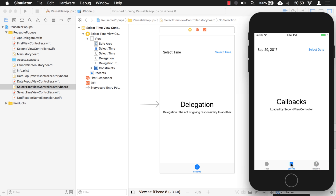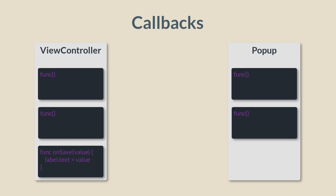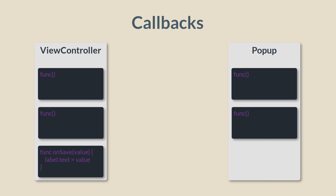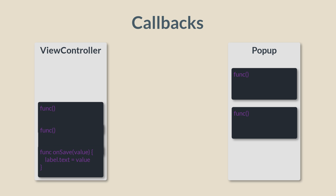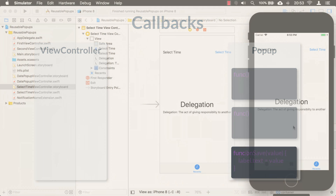If you remember from callbacks, what we did is we took a block of code — a function — and we passed just that function into the pop-up. Delegation is similar, except we're not passing just one function; we're actually passing a whole class. So let's see how that's done.